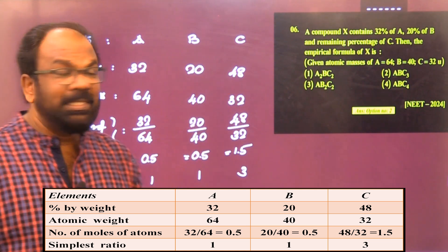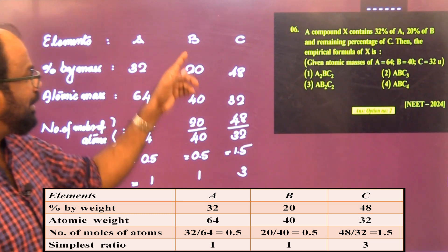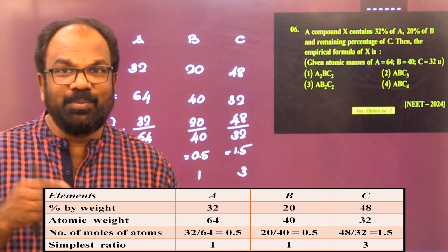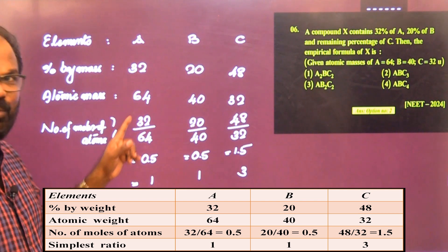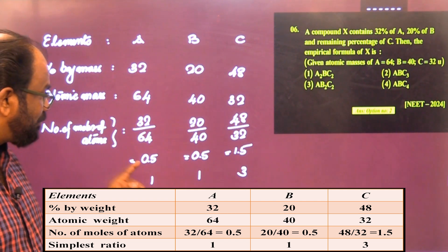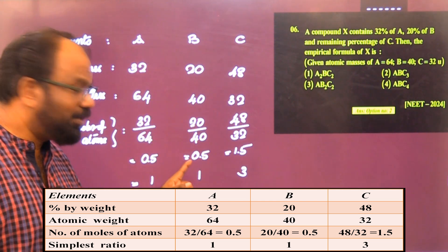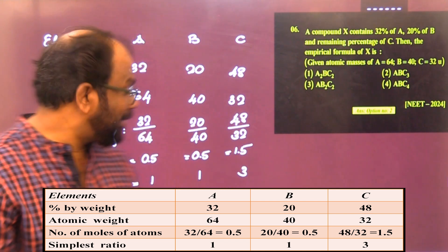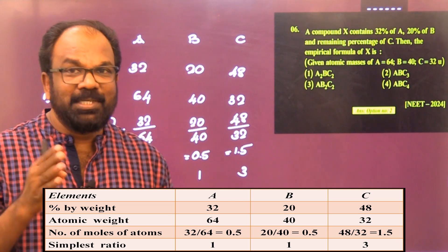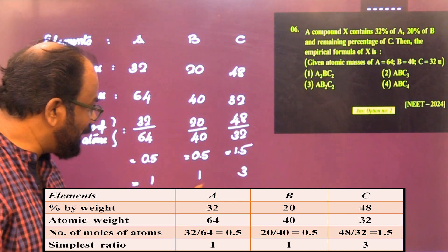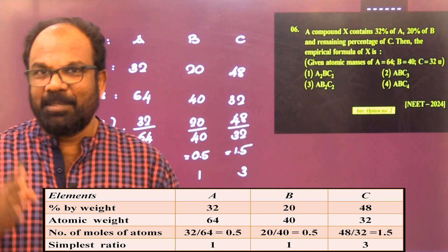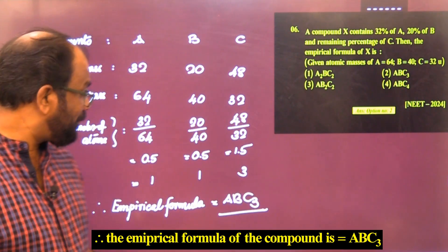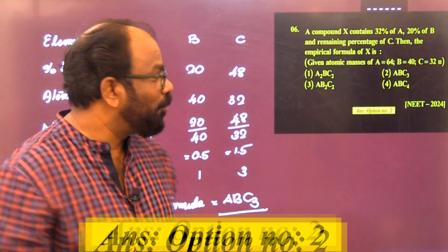Atomic masses: A = 64, B = 40, C = 32. Moles of A = 32/64 = 0.5; moles of B = 20/40 = 0.5; moles of C = 48/32 = 1.5. Multiplying all by 2 gives the simplest whole number ratio: A:B:C = 1:1:3. The compound contains A, B, and C in the ratio 1:1:3, so the empirical formula is ABC₃. The answer is option 2.